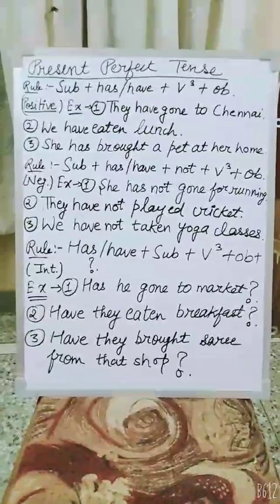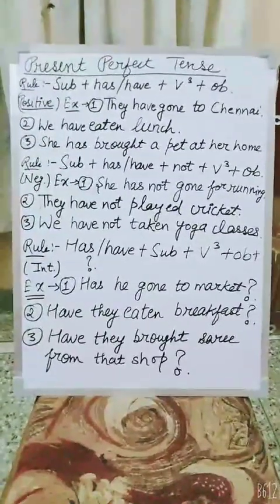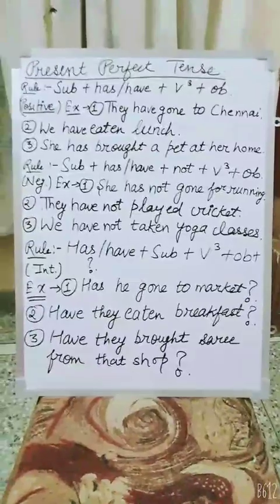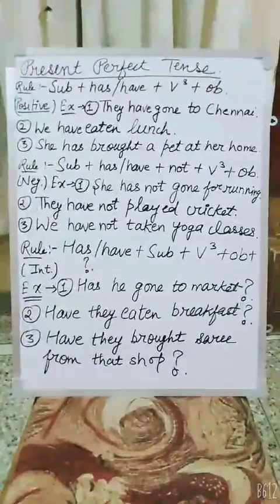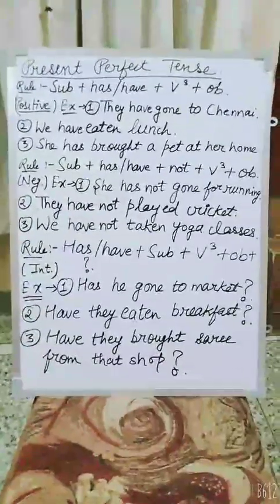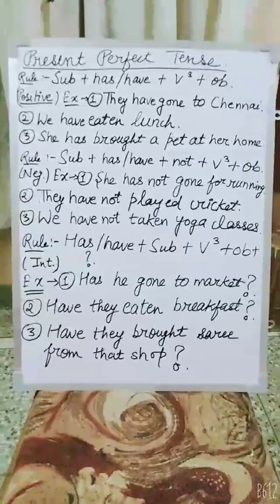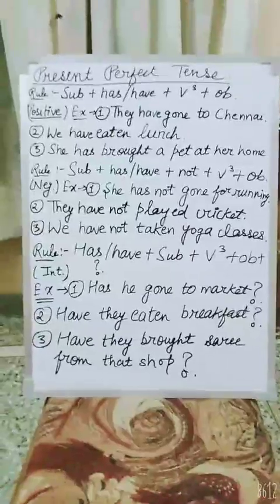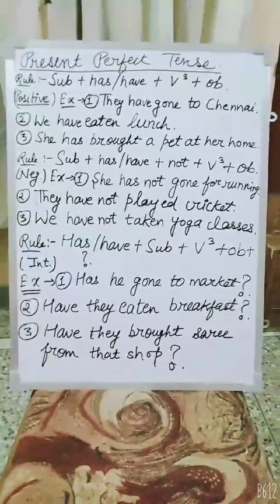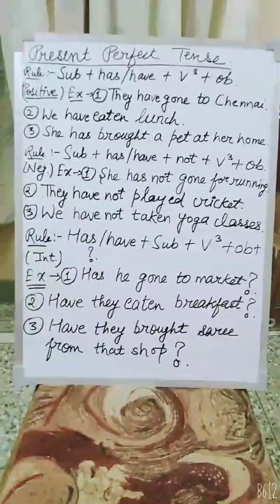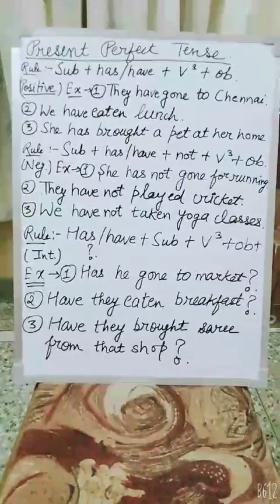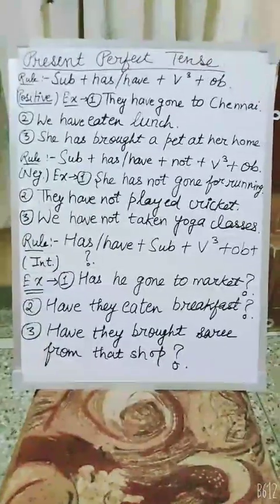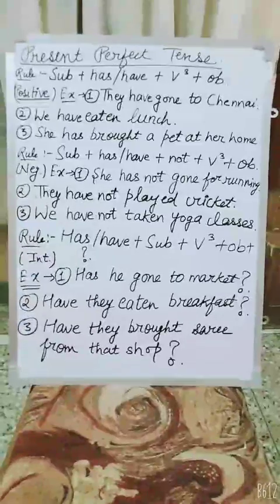The second sentence is 'We have eaten lunch.' Let's identify which is subject, which is helping verb, and which is third form. In the first sentence, 'they' is the subject, 'have' is the helping verb, 'gone' is the verb's third form, and 'Chennai' is the object. In the second sentence, 'we' is the subject, 'have' is the helping verb, 'eaten' is the verb's third form, and 'lunch' is the object.